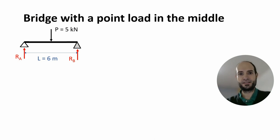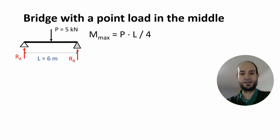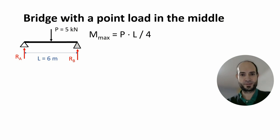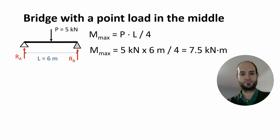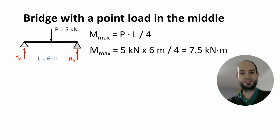For this case in particular, there is an equation to obtain the maximum bending moment, and it is: point load times the span divided by 4. So, 5 kN times 6 meters divided by 4 equals 7.5 kNm.